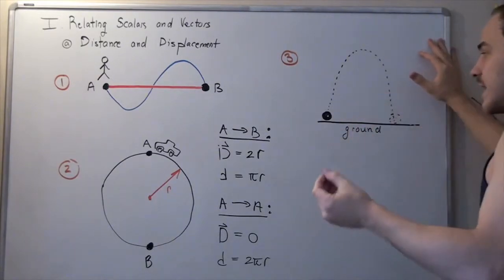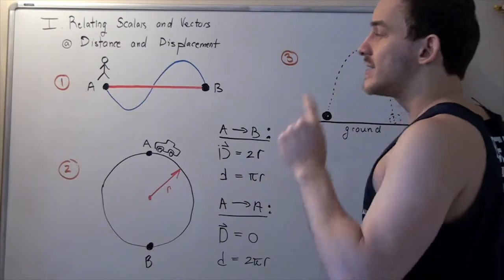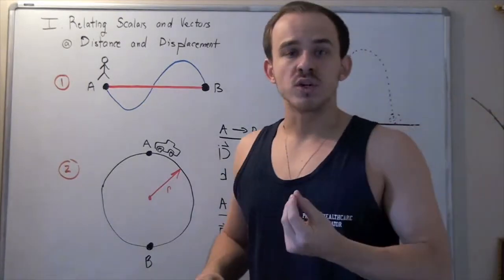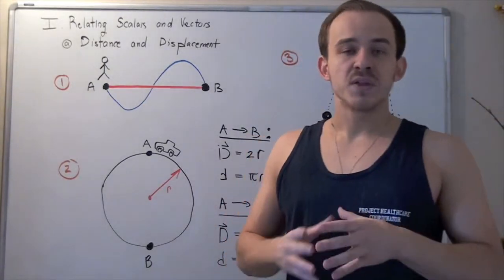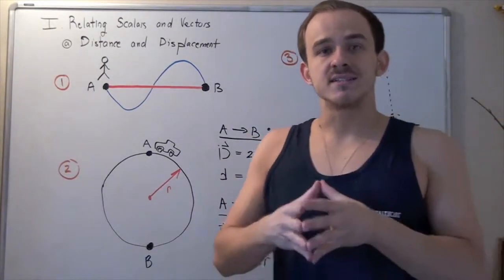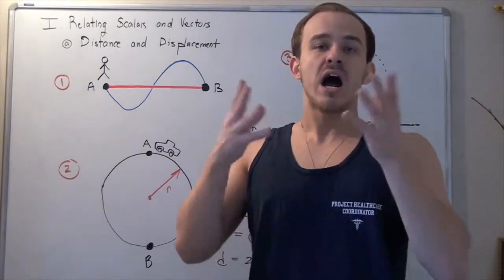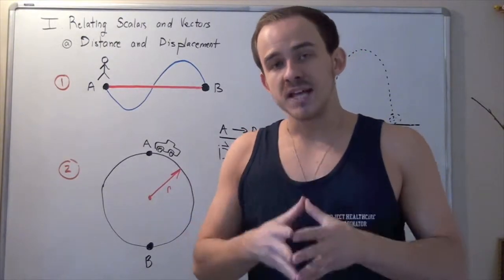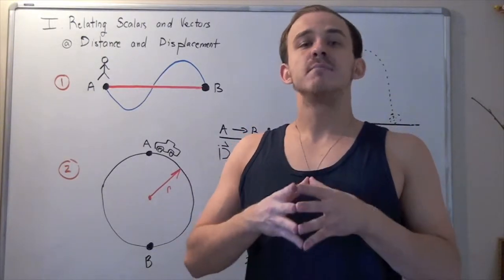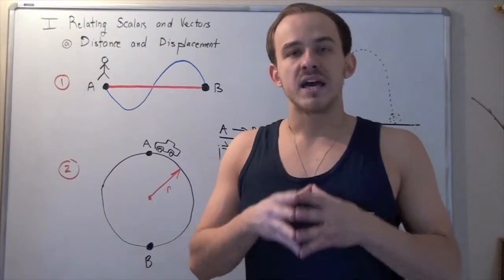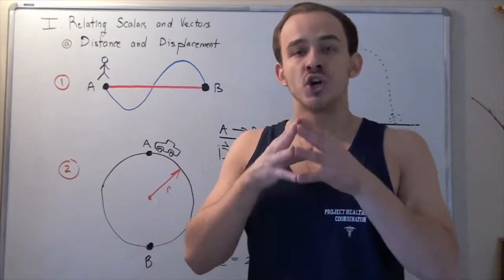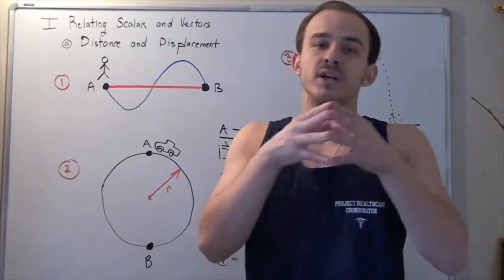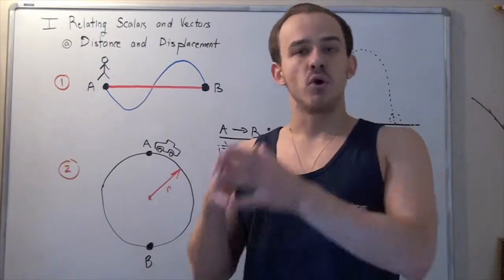So once again: distance has only magnitude — it's a scalar — and represents the actual pathway our object took. Displacement is the most direct pathway that our object could have taken to get from point A to point B, and it is a vector with both magnitude and direction.